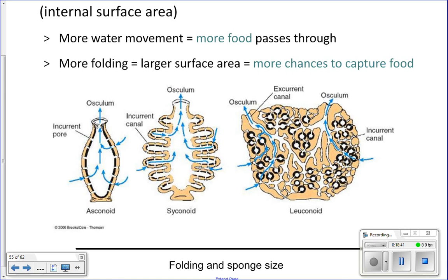There are three different body shapes of sponges. Asconoid is the simplest one — that's what we've been looking at. Syconoid has more folding, so it's the medium-sized body plan — you'll look at that one today. And then leuconoid, which has the most folding — these are the biggest types of sponges.